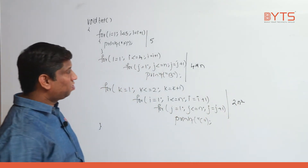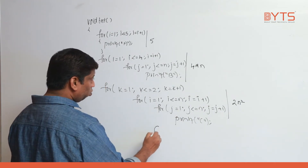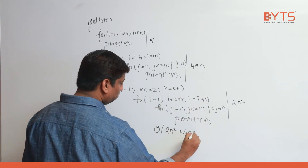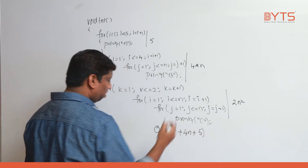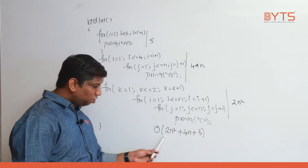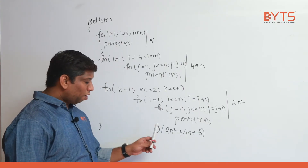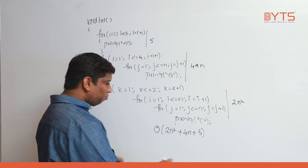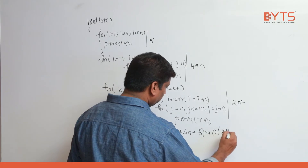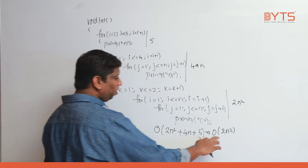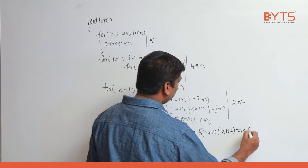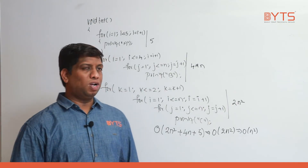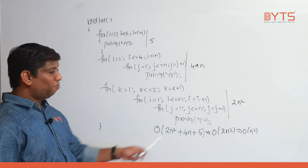The total time complexity is O of 2n square plus 4n plus 5. This is a quadratic expression. We always take the dominant term. Compared to n square, n is a small term, and 5 is a constant. So this simplifies to O of 2n square. Since 2 is a constant, this becomes O of n square. Whenever we find time complexity, we find the approximate time, not exact time. The time complexity of this program is O of n square.